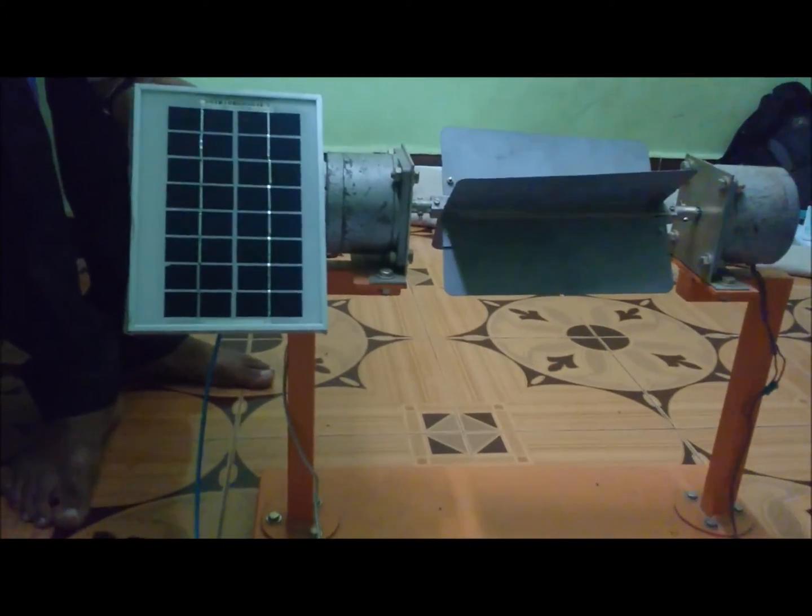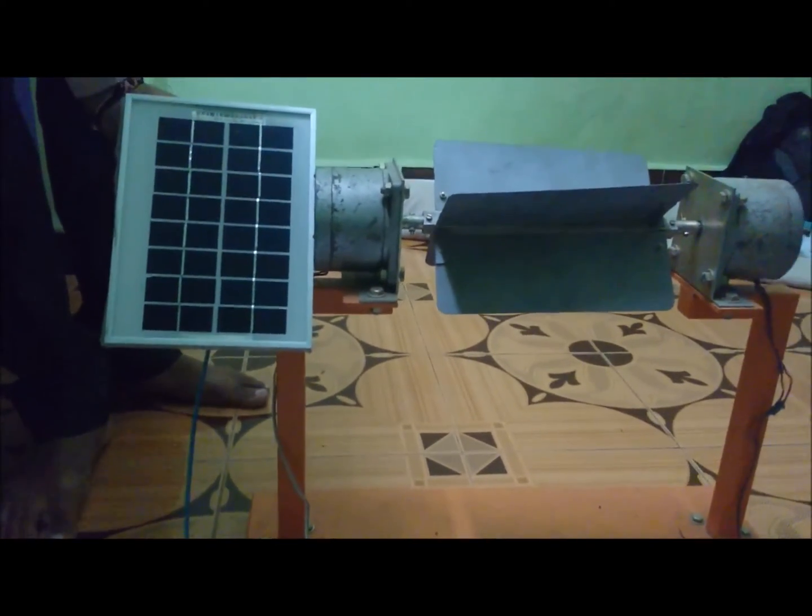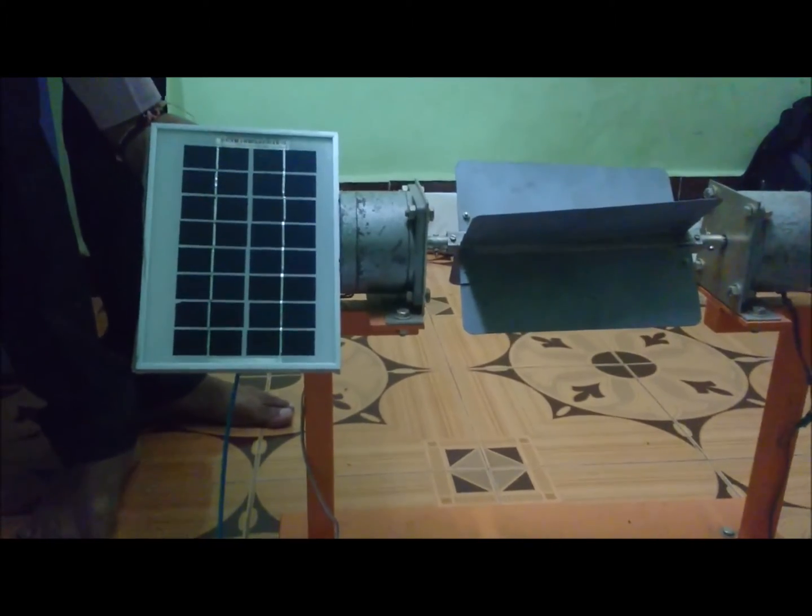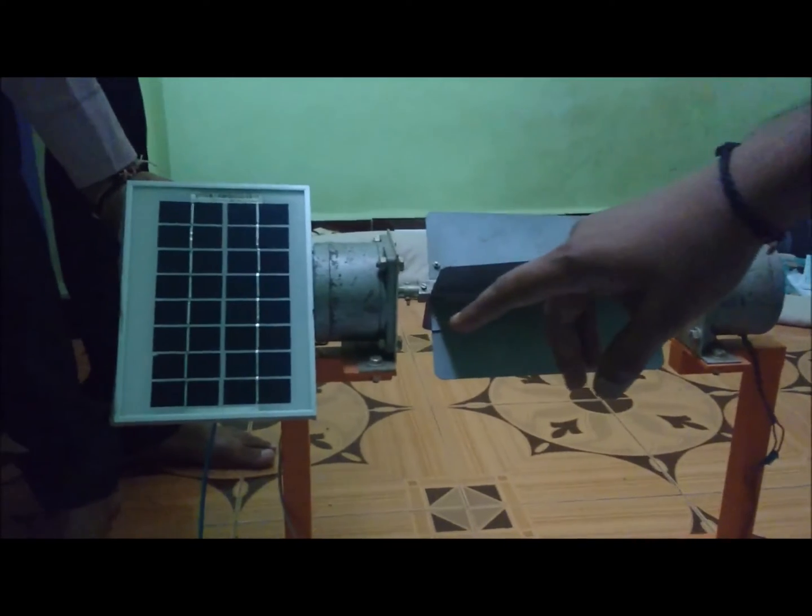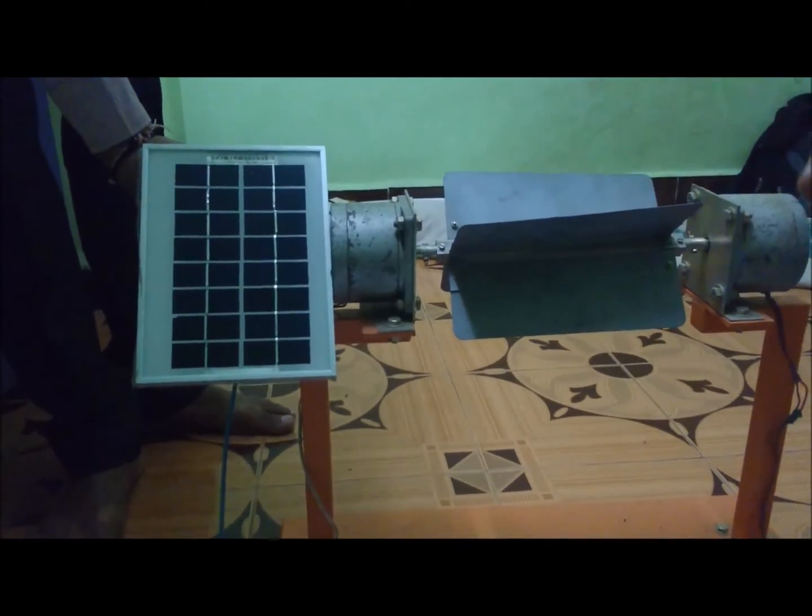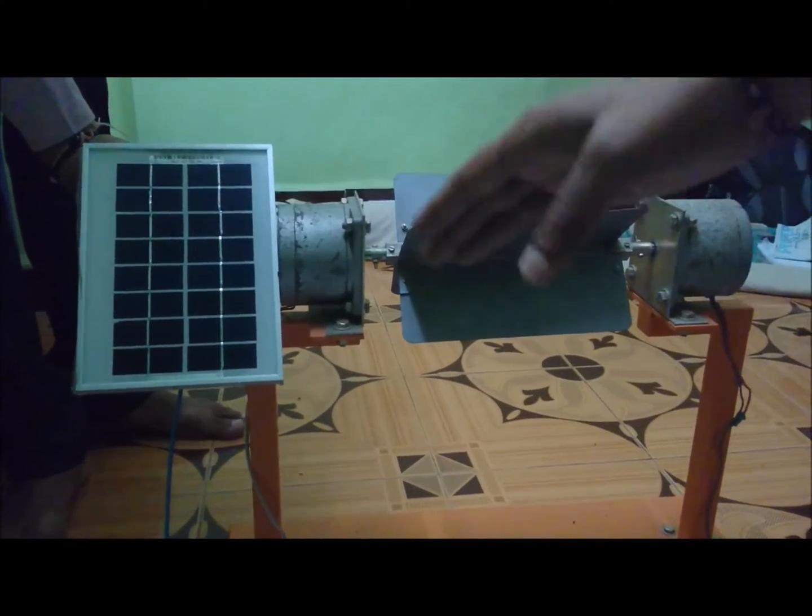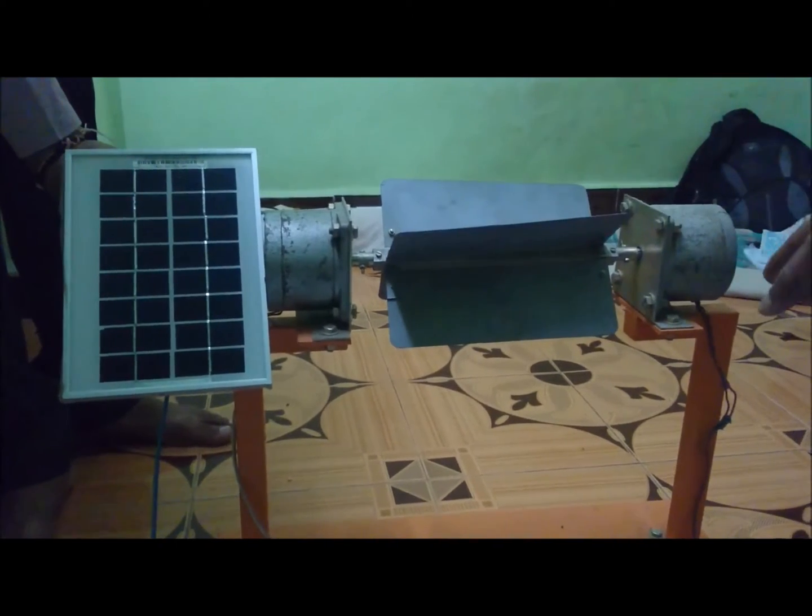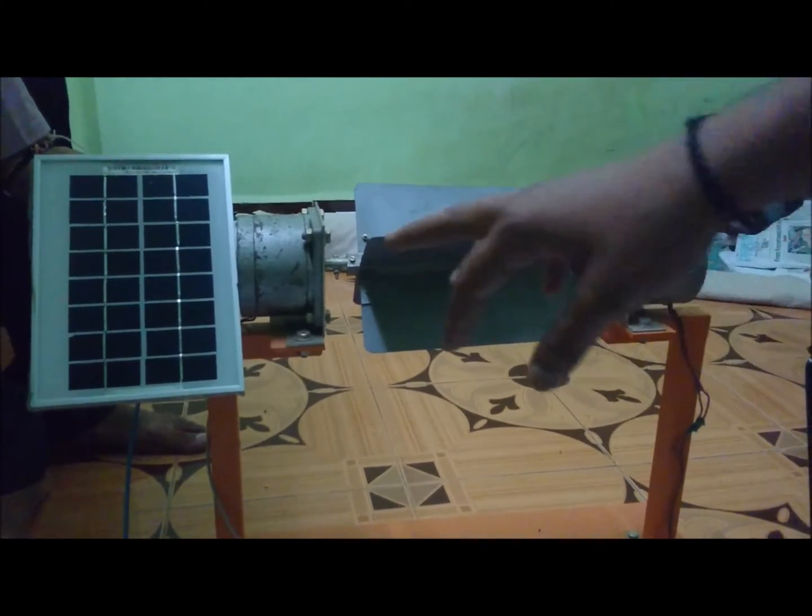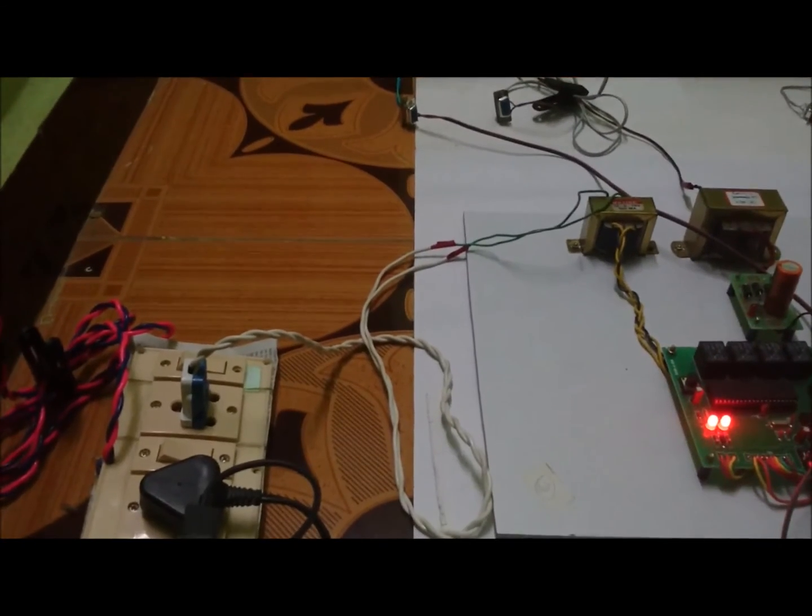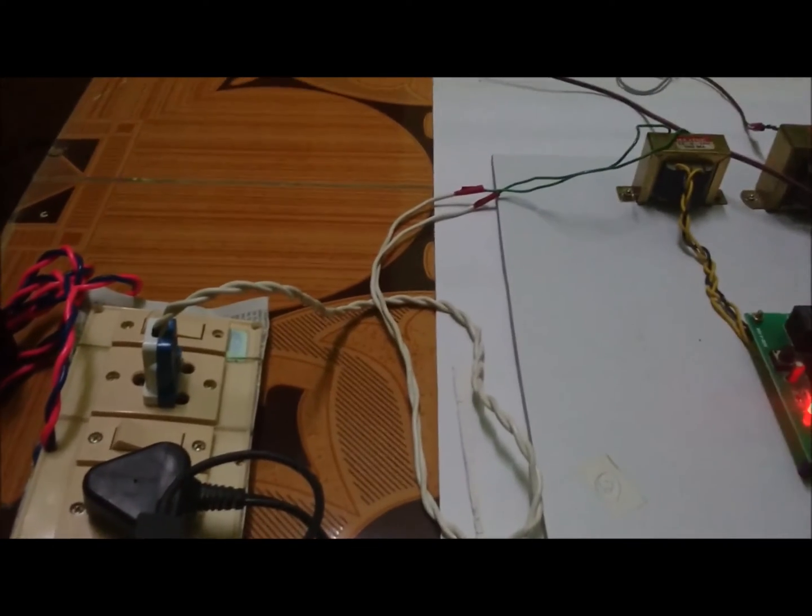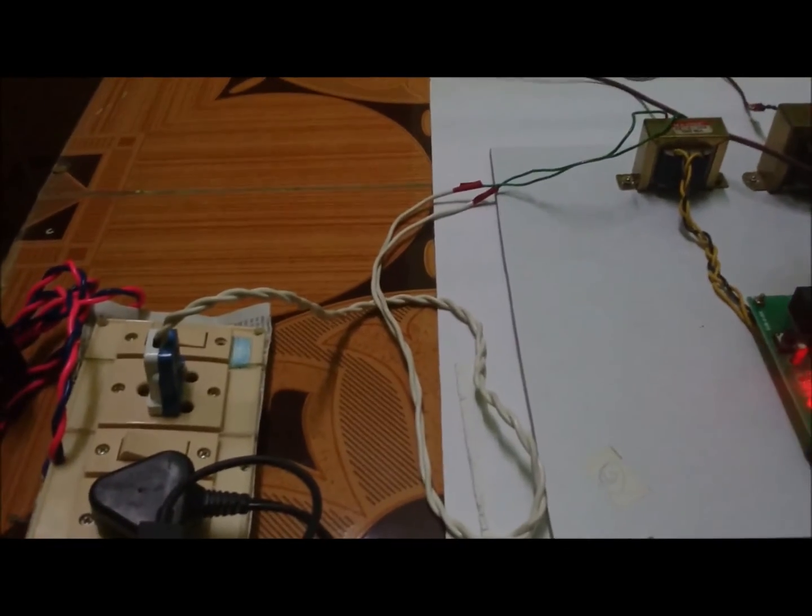Since our project is based on hybrid power generation, along with wind energy we are using a solar panel which will capture the sunlight from the sun and can be placed either in sideways to the wind turbine. Initially we need external supply to operate this circuit from a plug.